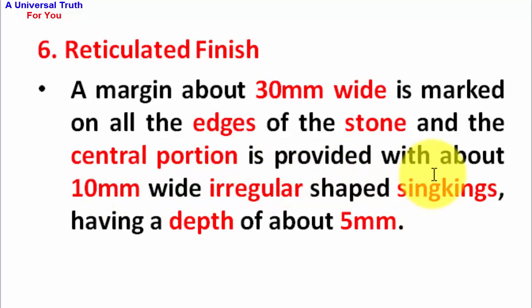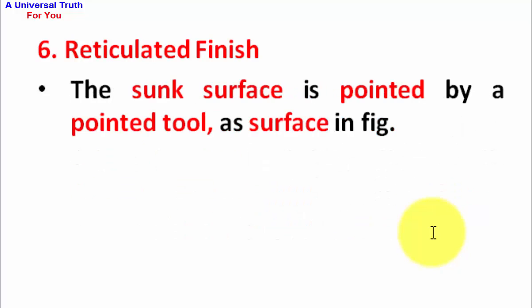The irregular shaped sinkings have a depth of about 5 mm. The sunk surface is pointed by a pointed tool as shown in figure.